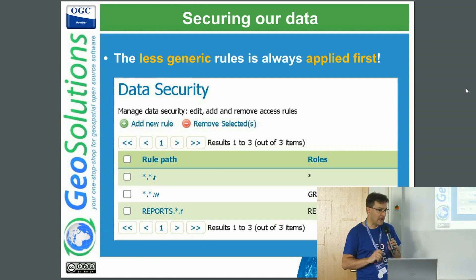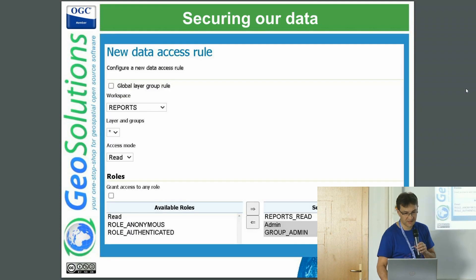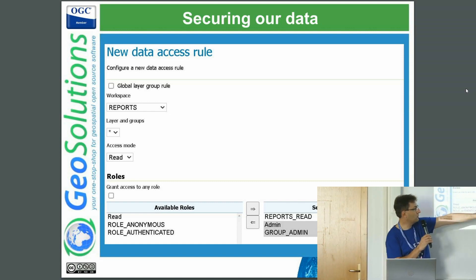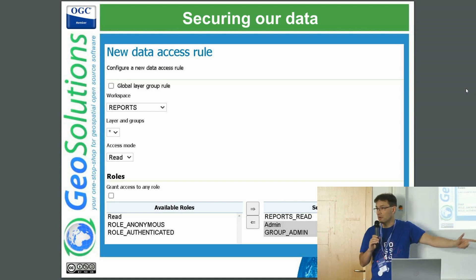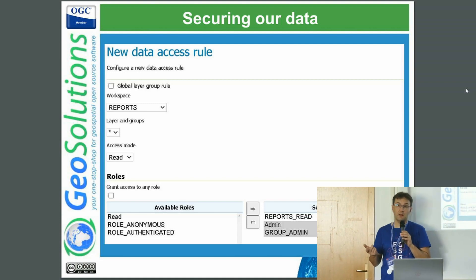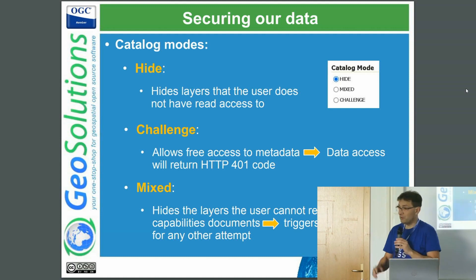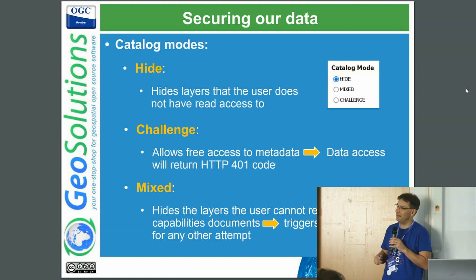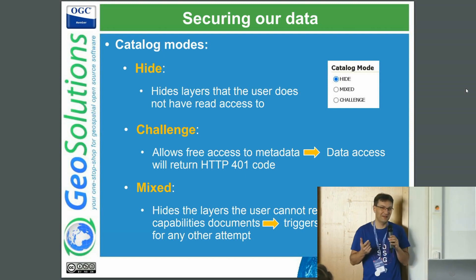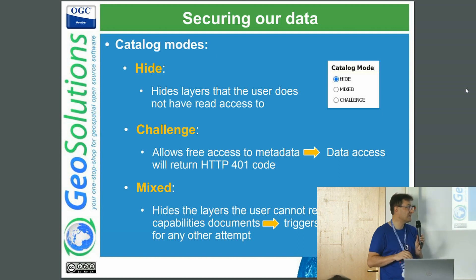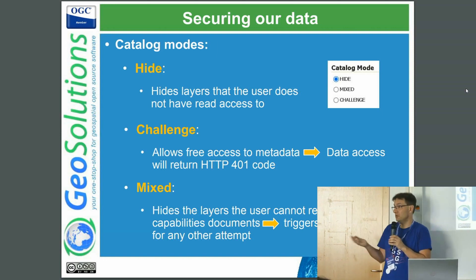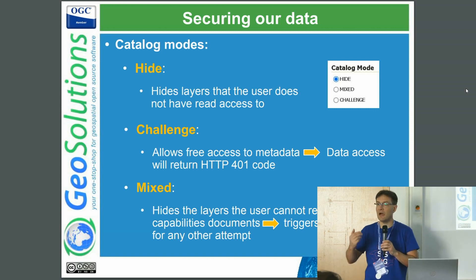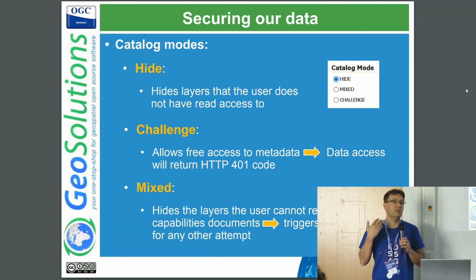For data, we have a similar situation. For example, for the reports workspace and any layer inside it, you have to be either an administrator or have the reports-read role in order to access that workspace. When you cannot access it, there are three different policies. Hide is the default: if you are not authorized, you don't see it — it's a high-security policy where GeoServer will pretend the workspace or layer simply does not exist.